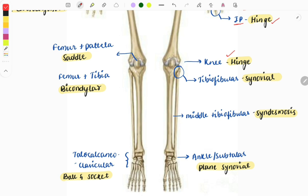The next joint, that is the joint between the femur and the patella, is the saddle variety. The joint between the femur and the tibia, these two joints, are bicondylar joints.